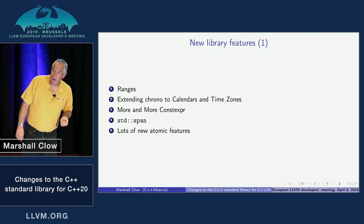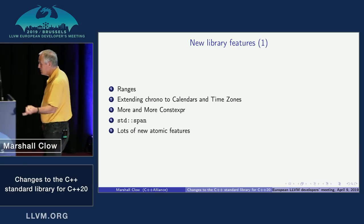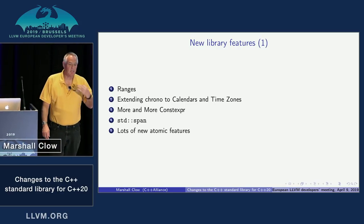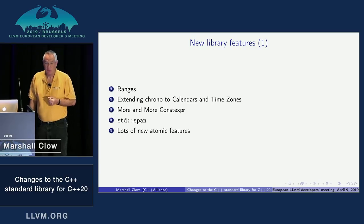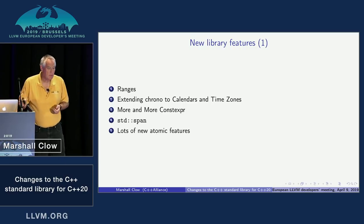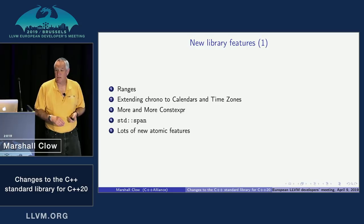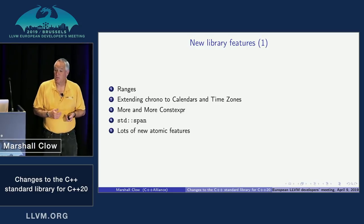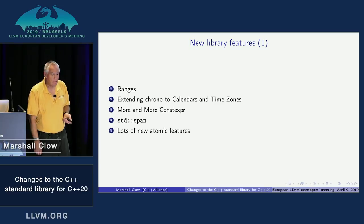There's a whole pile of new atomic features: atomic shared pointers, atomic floating points, and atomic_ref — grouped together because they all live in the atomic header.